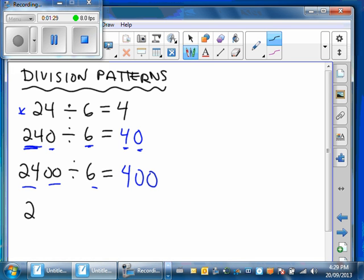If we go one step further, we have 24,000 divided by 6. So 24 divided by 6 equals 4, and we have 1, 2, 3 zeros for a total of 4,000.